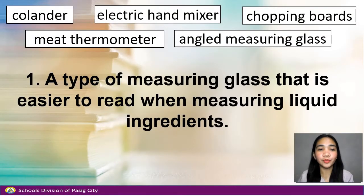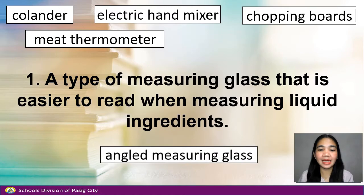Number 1. A type of measuring glass that is easier to read when measuring liquid ingredients. Answer: Angled measuring glass.